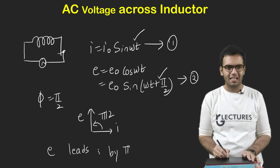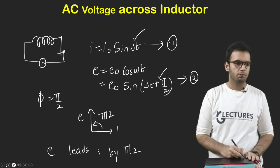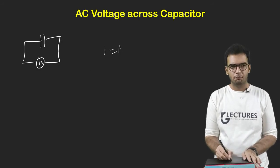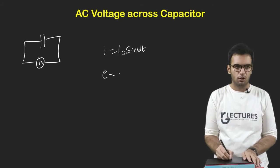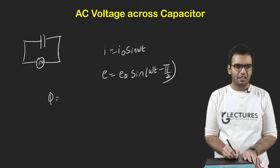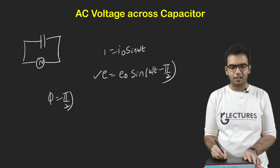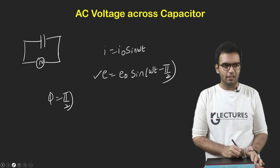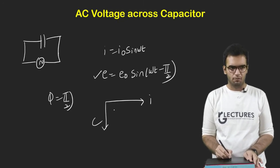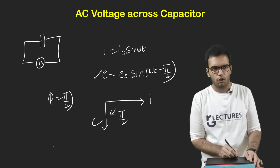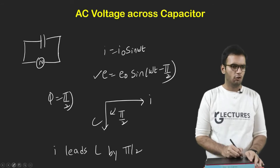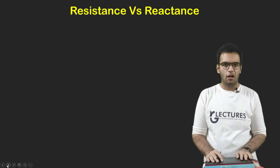Everything will be explained in detail in upcoming videos — this is just an overview. For a capacitor, if the current is given as I₀ sin(ωt), the voltage is found to lag behind, with E at -90 degrees. Compared to the inductor where it is +90, in the capacitor the voltage angle is -90. So current leads the capacitor voltage by 90 degrees. Using these simple circuits we will make LR, CR, and LCR circuits.